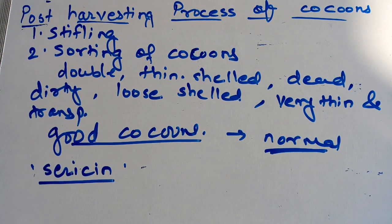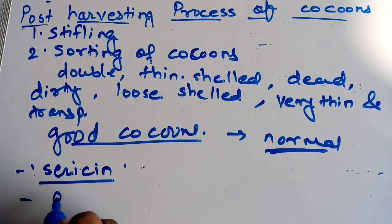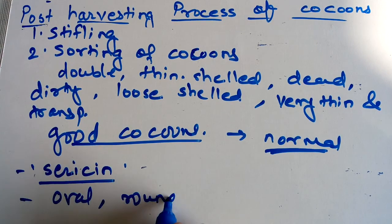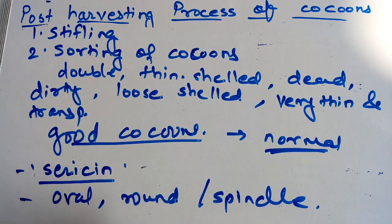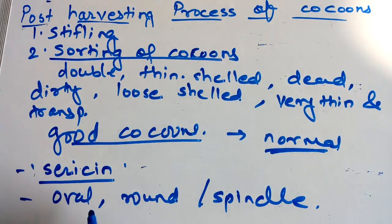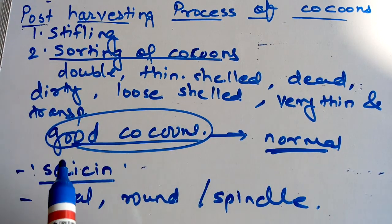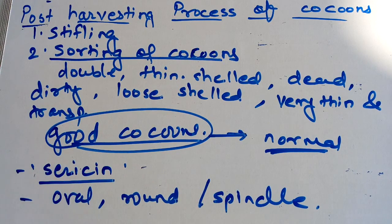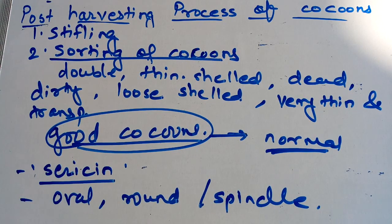In the cocoons of domesticated silkworms there are various shapes — some cocoons are oval in shape, some are round or spindle in shape. There is a variety of sizes and shapes of cocoons. In sorting of cocoons, we are interested in the good quality, meaning normal cocoons. The color of the cocoon depends on the pigment present in the sericin, and the shape varies as well. This is all about the sorting of cocoons. Thank you.